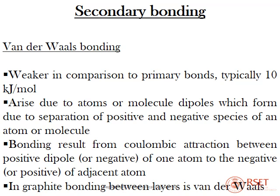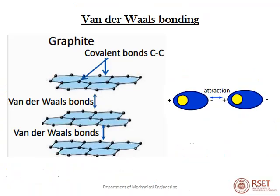Secondary bonding includes van der Waals bonding, which is much weaker than primary bonds — typically only about 10 kJ/mol bond strength. It arises due to atomic or molecular dipoles, which form due to separation of positive and negative species. Bonding results from Coulombic attraction between the positive dipole of one atom and the negative dipole of an adjacent atom. In graphite, van der Waals forces between the layers are much weaker compared to the primary interatomic covalent bonds within layers.